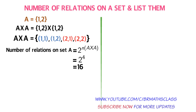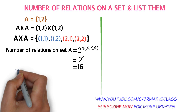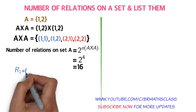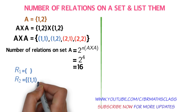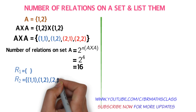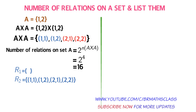We know that any subset of A×A is called a relation on A. First, the empty set is a subset of A×A, so I take R1 as the empty set — R1 is a relation on set A. Next, I consider R2 as all the elements of A×A. R2 is also a relation on A because R2 is a subset of A×A.